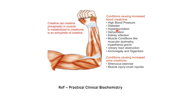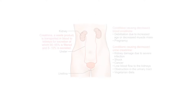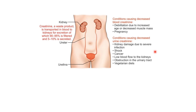Other conditions causing increased blood creatinine include high blood pressure, diabetes, hypothyroidism, dehydration, and muscle conditions like muscular dystrophy, myasthenia gravis, and acromegaly. Decreased blood creatinine can occur in debilitation due to increased age or decreased muscle mass, and in pregnancy. Causes of decreased urinary creatinine include kidney damage due to severe infection, shock, cancer, and vegetarian diets.